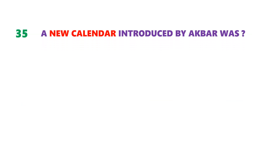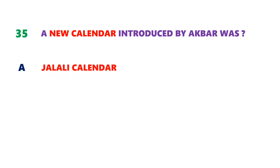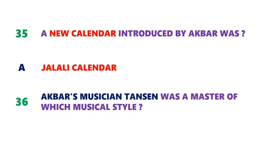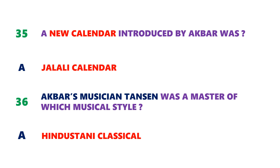Question number 35: what was the new calendar introduced by Akbar? The answer is Jalali calendar. Next question: Akbar's musician Tansen was a master of which musical style? The answer is Hindustani classical music.